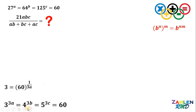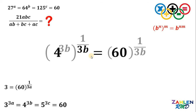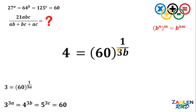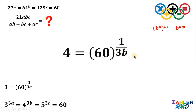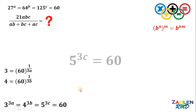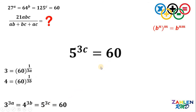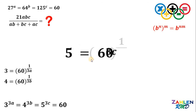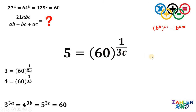Next, let's get 4 raised to 3B and 60. Again, let's eliminate the exponent 3B. To do that, let's raise both sides by 1 over 3B. So 3B times 1 over 3B is just 1, and the left-hand side becomes 4, equal to 60 raised to 1 over 3B. Similarly, let's get 5 raised to 3C and 60. Raising both sides by 1 over 3C, therefore 5 must equal 60 raised to 1 over 3C.